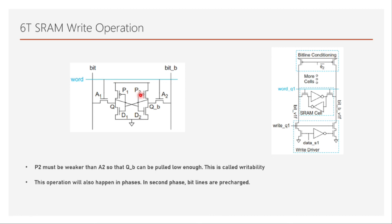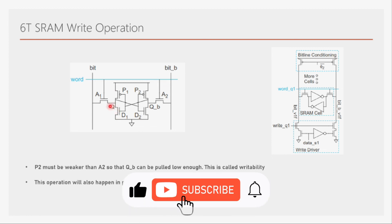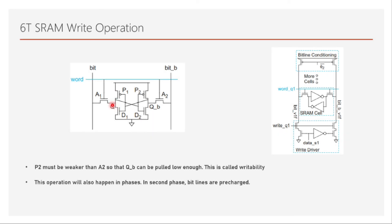Some arrays use tri-state drivers to improve writeability by actively driving one bit line high while the other is pulled low. In summary, we saw that writing a 1 directly to Q is not possible due to read stability, but writing a 0 to Q-bar through access transistor A2 achieves it — provided P2 is weak enough relative to A2. That is the writeability constraint. Thanks for watching, see you in the next video.